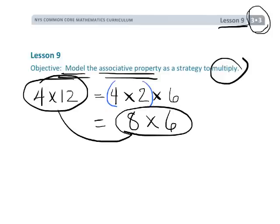The student would understand that in both cases the answer is 48. So we're going to be using the associative property — the concept of decomposing a number into its factors — and then using the associative property to make the problem simpler.